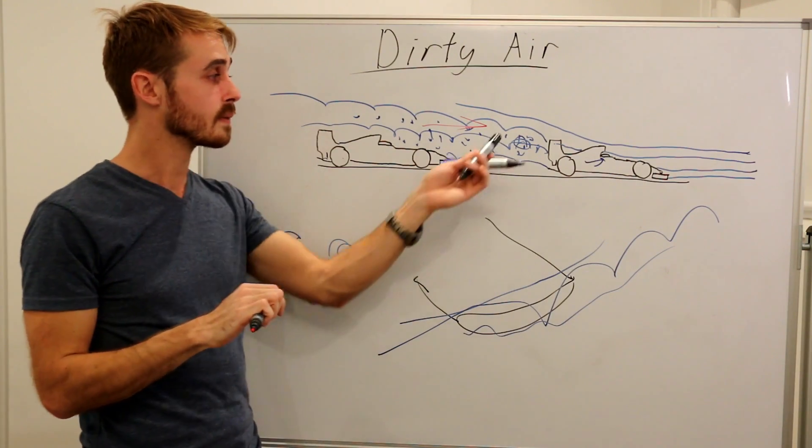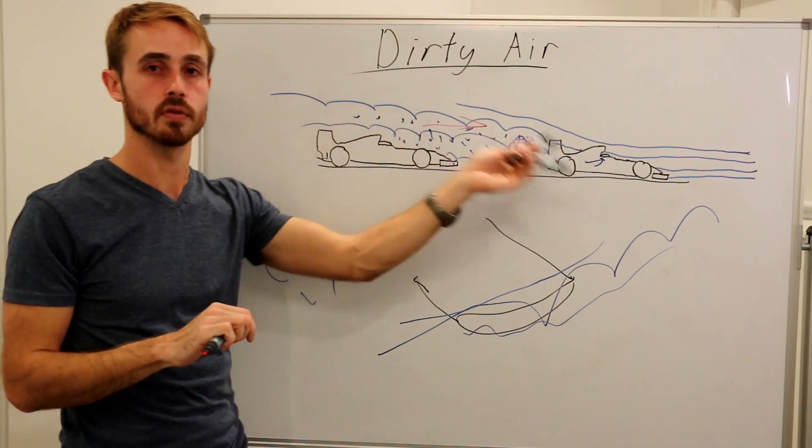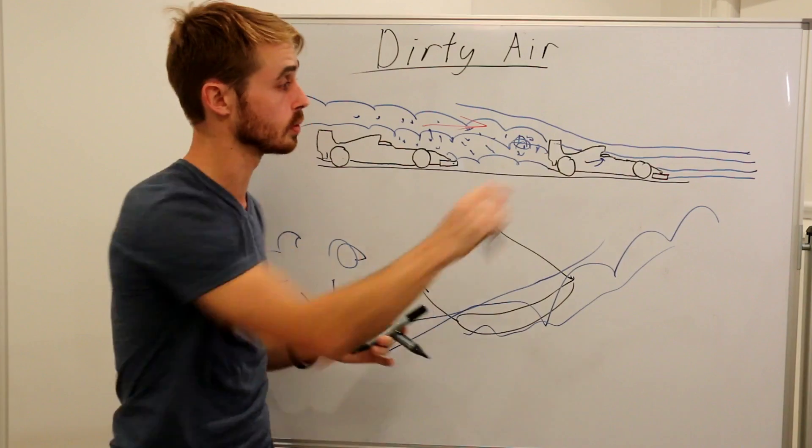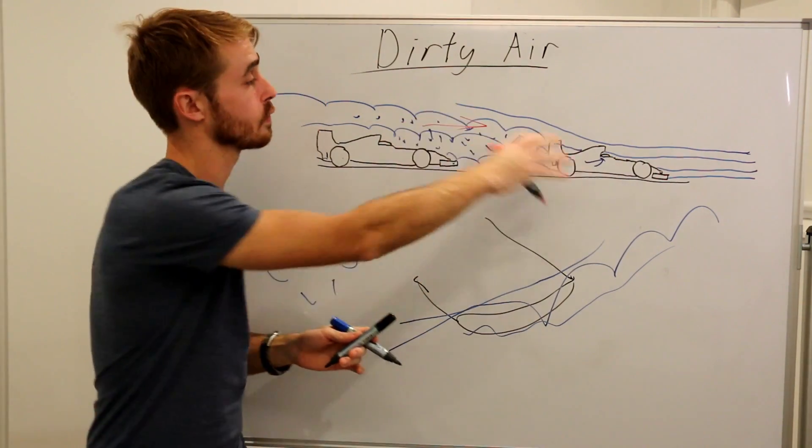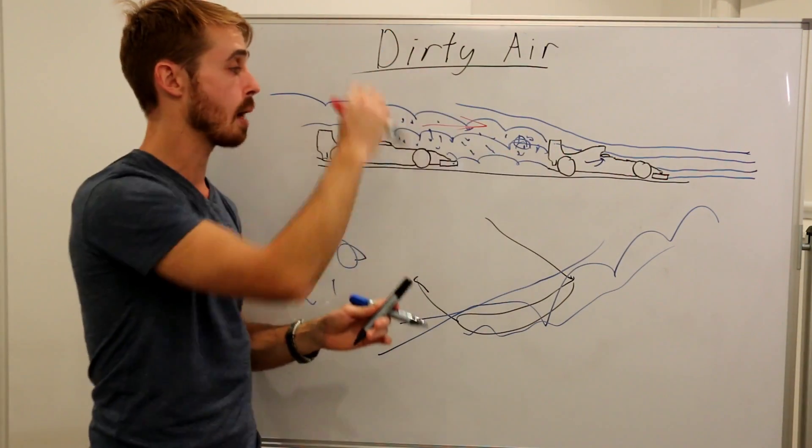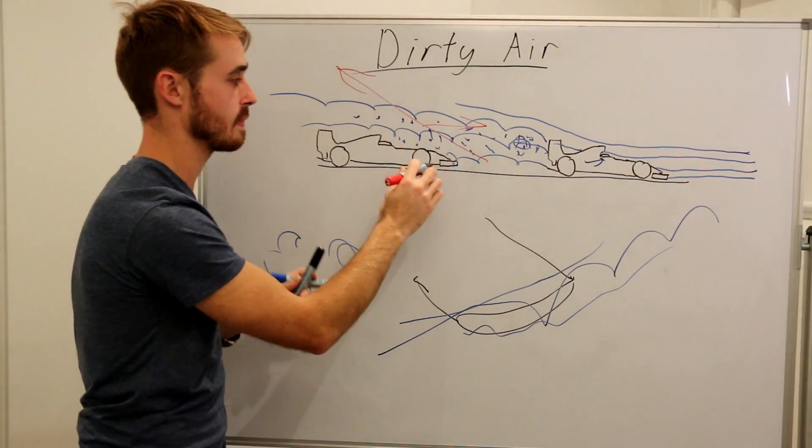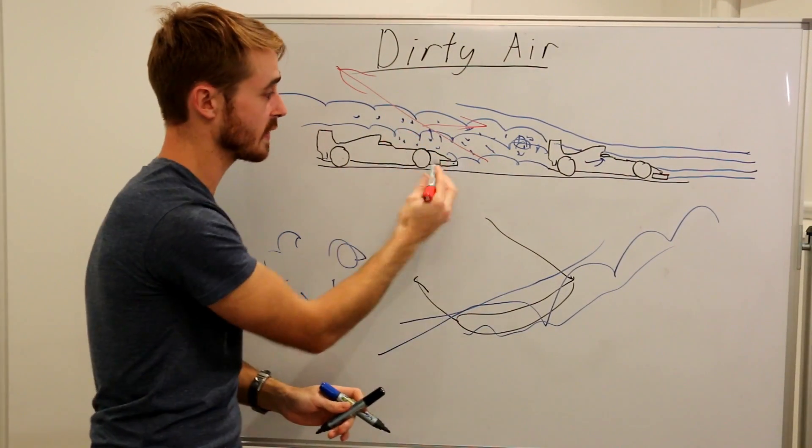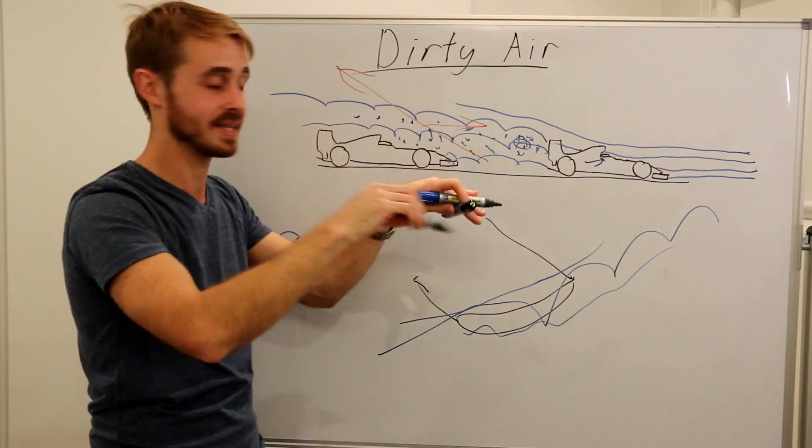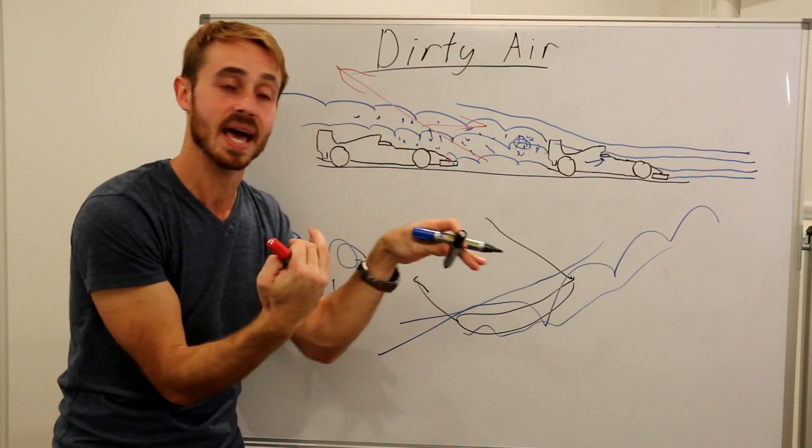In addition to these problems here, having this upwash from the car in front is also an issue. Any car producing downforce will have an upwash. Upwash means that the flow is going to have a vector seen from the rear car in that way. If the flow is going up that way and your wing's trying to push the car down, it now has less angle of attack.